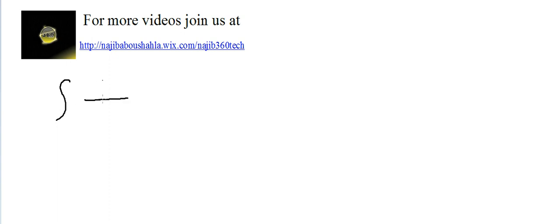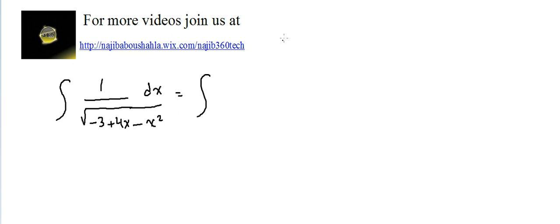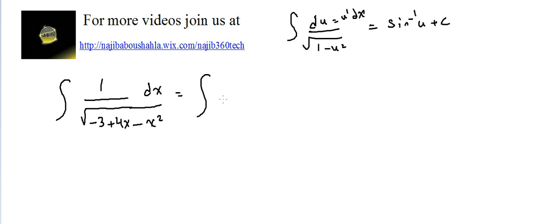Another video for integrals involving inverse trigonometric functions. We have this integral of 1 over radical of (-3 + 4x - x²). The rule we use is: integral of du over radical(1 - u²) equals sine inverse of u plus C.